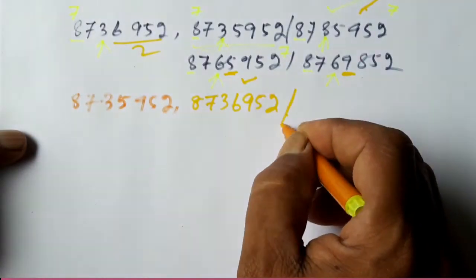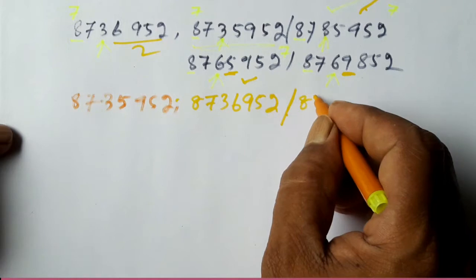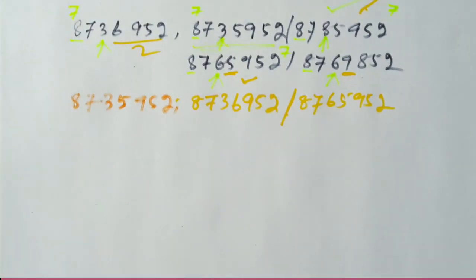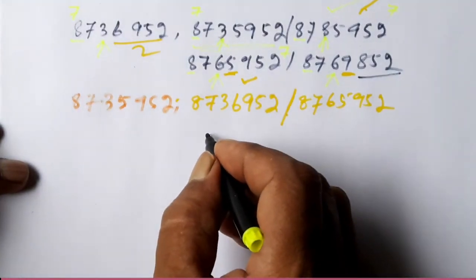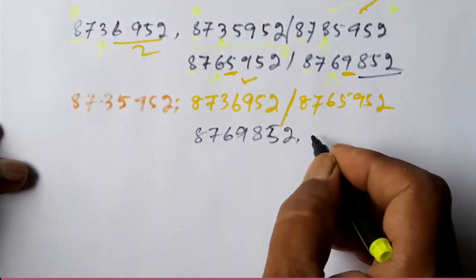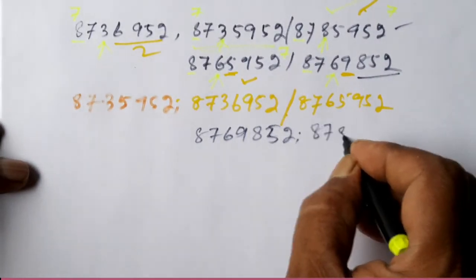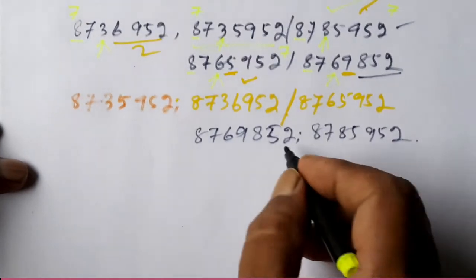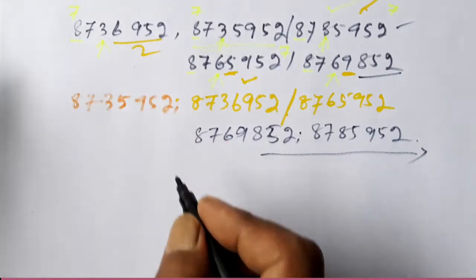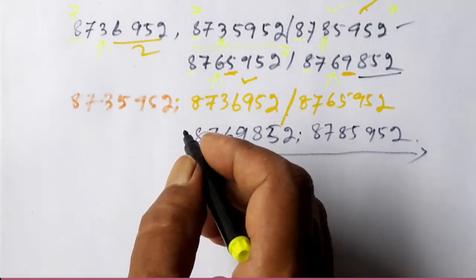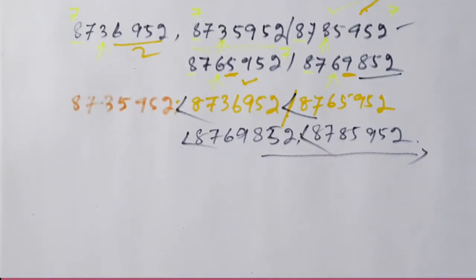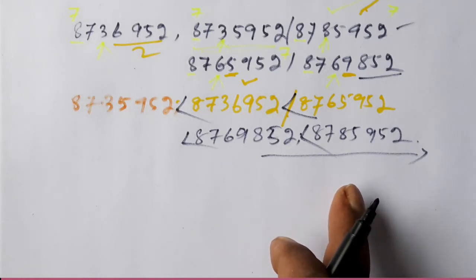Continuing: among the numbers with 6 in the third place, comparing the fourth digit — here is 5, here is 9 — so 8765952 comes before 8769852. We write: 8735952, then 8736952, then 8765952, then 8769852, then 8785952. Between each we place the less than symbol. This is the ascending order.